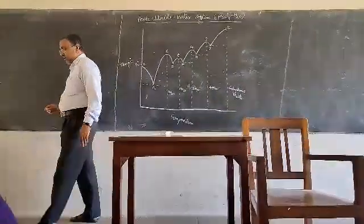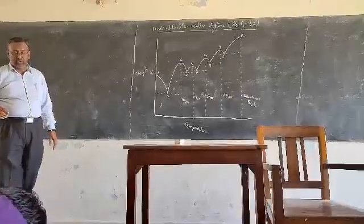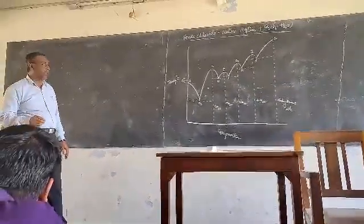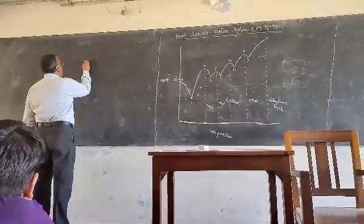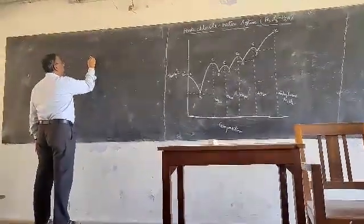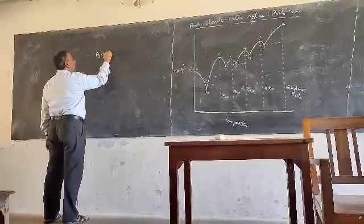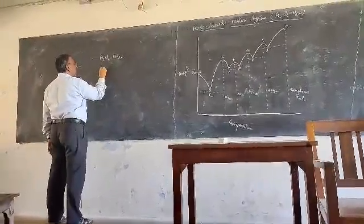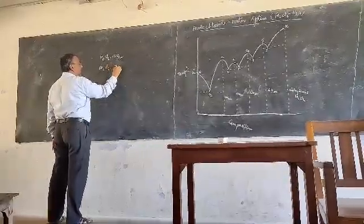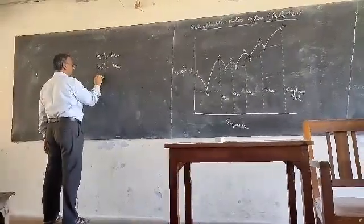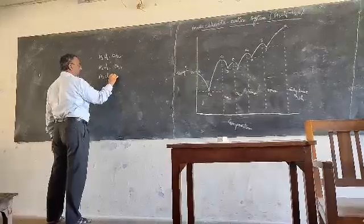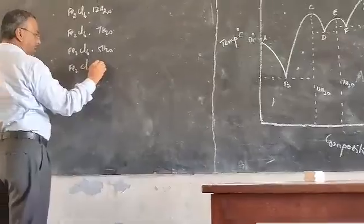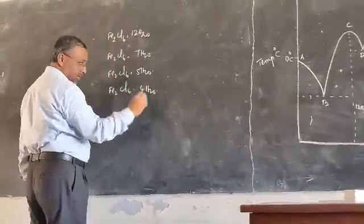It has the formation of four stable crystalline hydrates: ferric chloride dodecahydrate, ferric chloride heptahydrate, ferric chloride pentahydrate, and ferric chloride tetrahydrate.